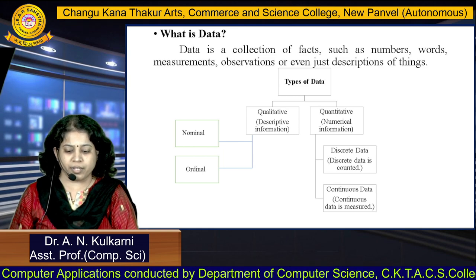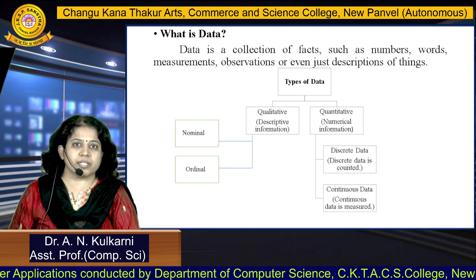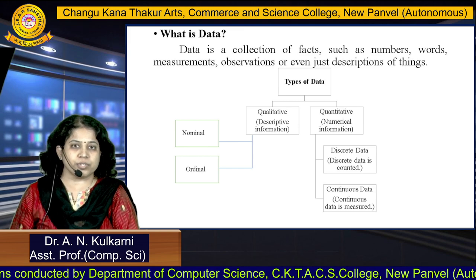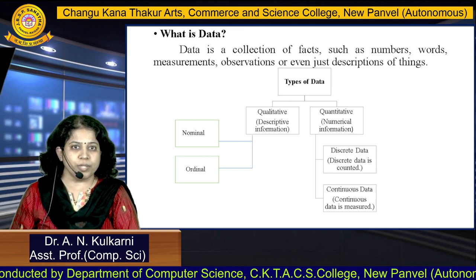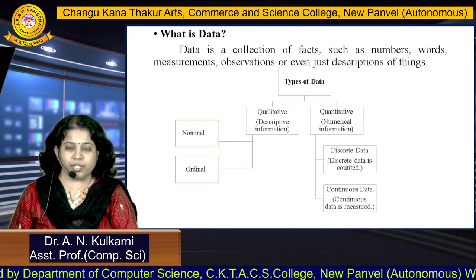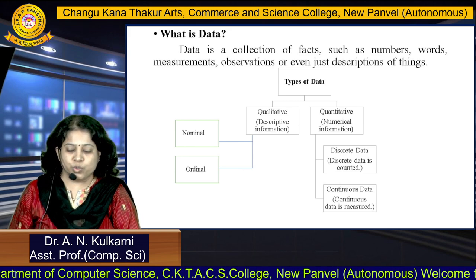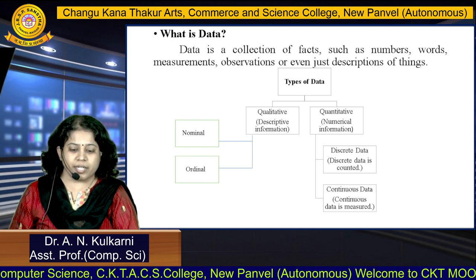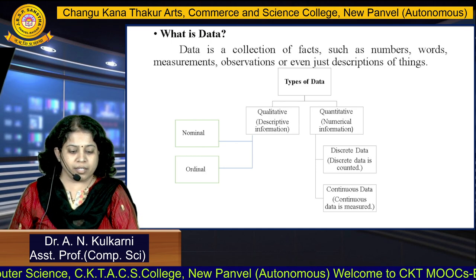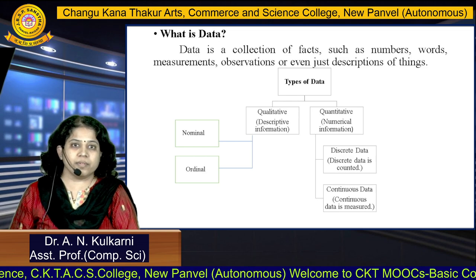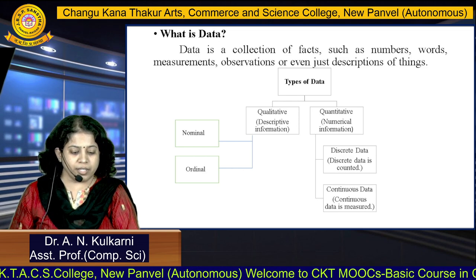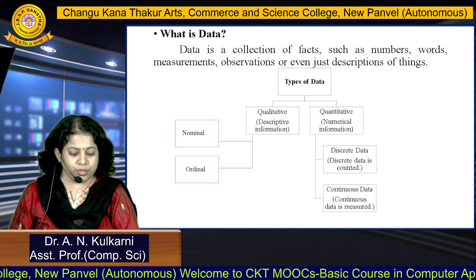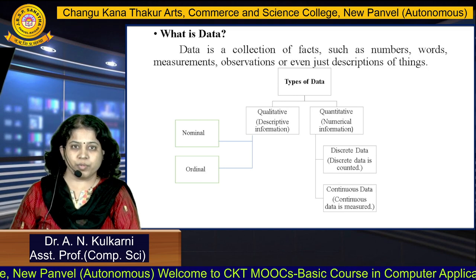What is actually qualitative data? Qualitative is nothing but descriptive information, while quantitative is nothing but numerical information. Under qualitative, there are two categories: nominal data and ordinal data. And under quantitative, again there are two categories: discrete data which we can count, and continuous data which we can measure.